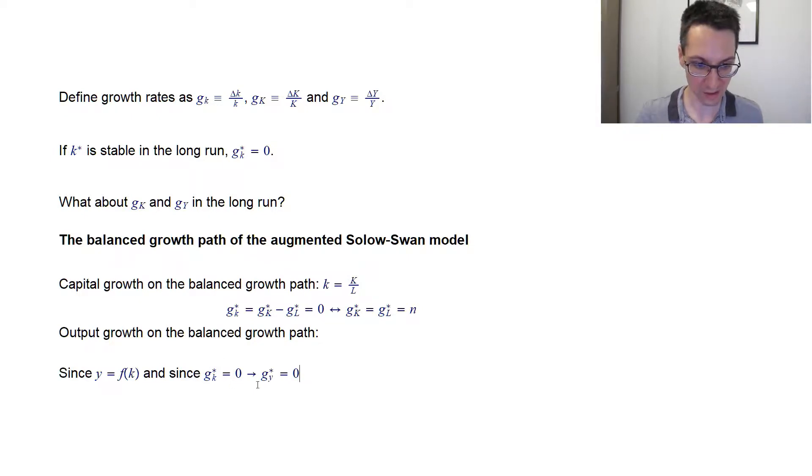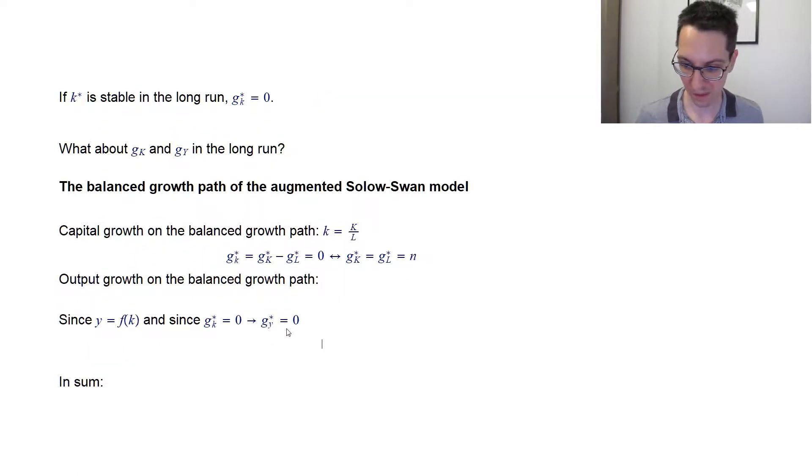Now, what does that mean for us? Well, it means that g of small y star equals, again, I do the same thing. So what is small y? It's capital Y total output divided by capital L total population. So its growth rate is g of Y star minus g of L star. So I know that g of Y star will be equal to g of L star, which is again equal to n.